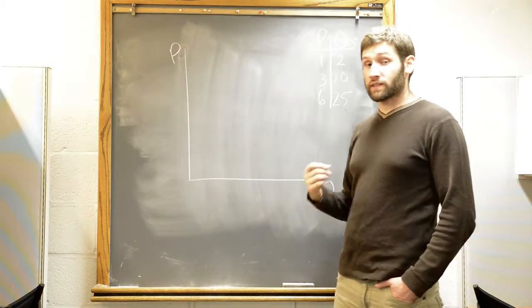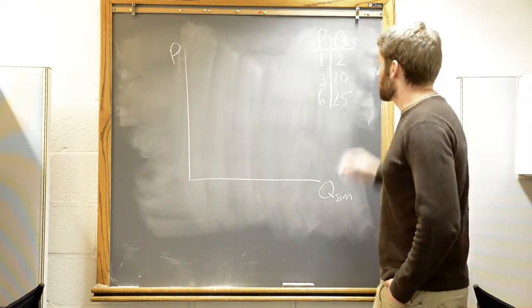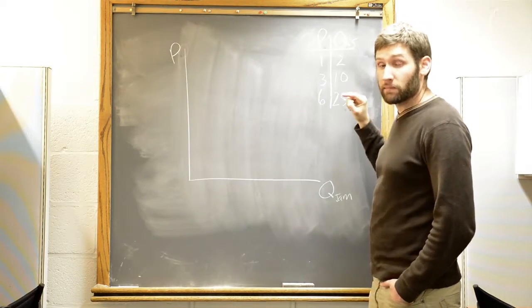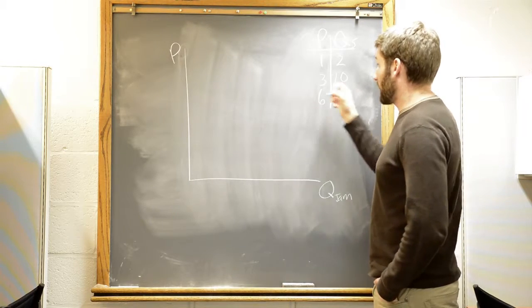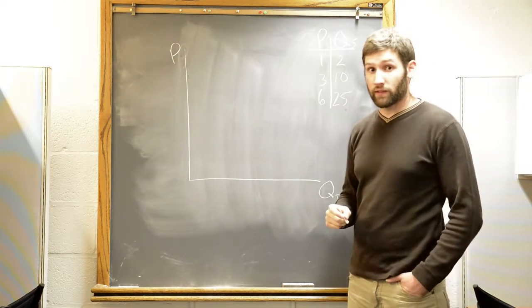So our supply curve is telling us the relationship between the price and the quantity supplied, which is, at that price, how many jars am I willing to supply?